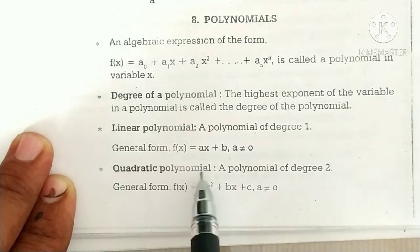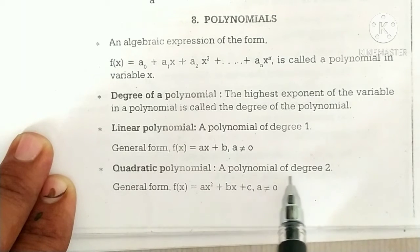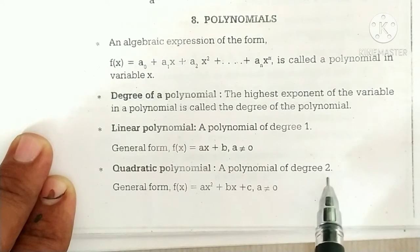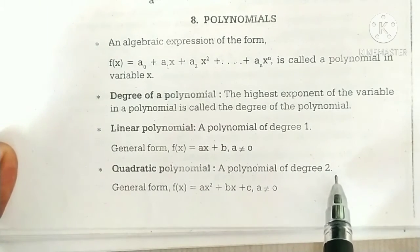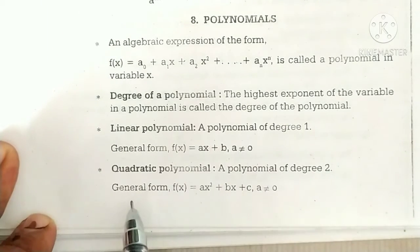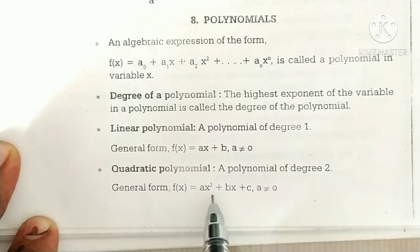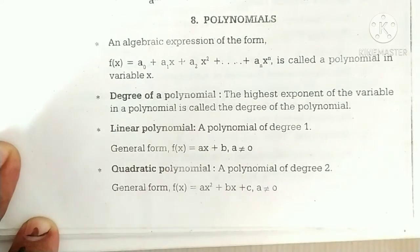Quadratic polynomial: a polynomial of degree 2. General form: f of x is equal to ax squared plus bx plus c, where a is not equal to 0.